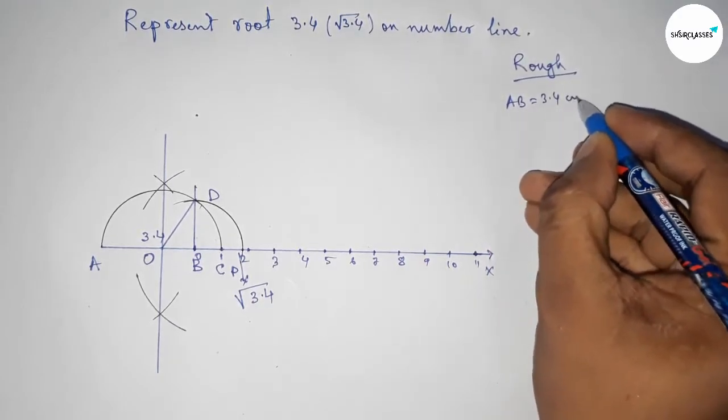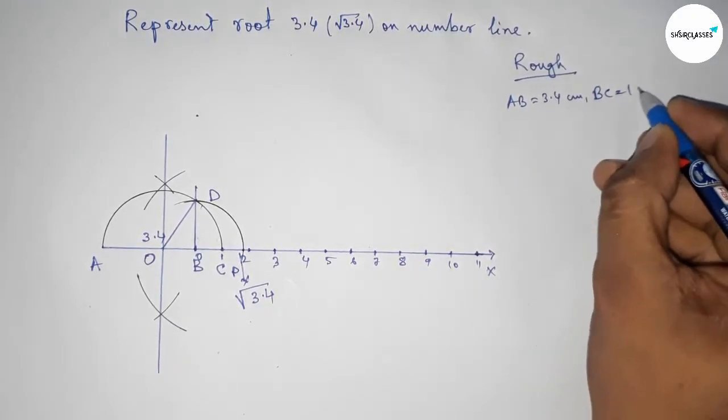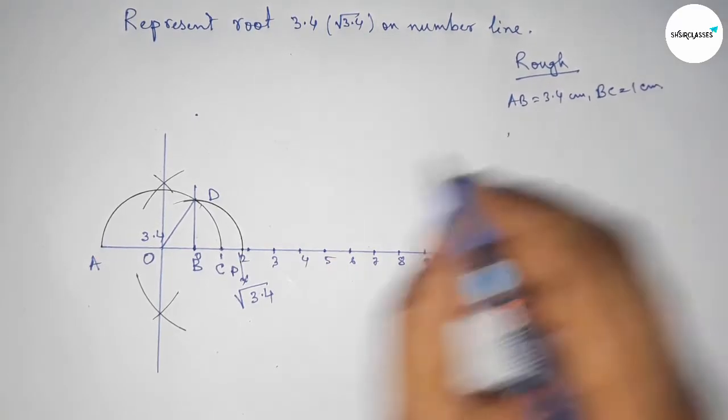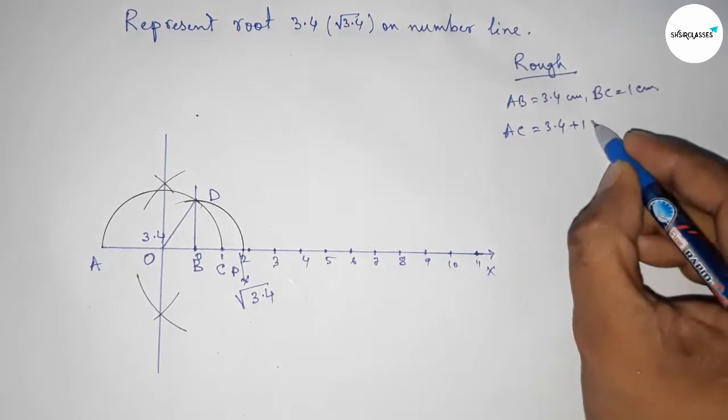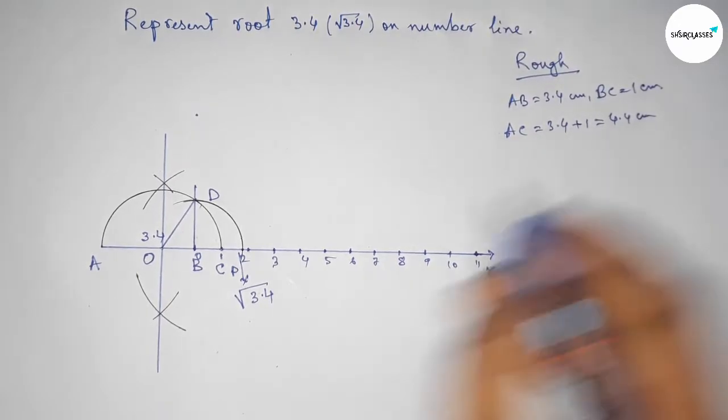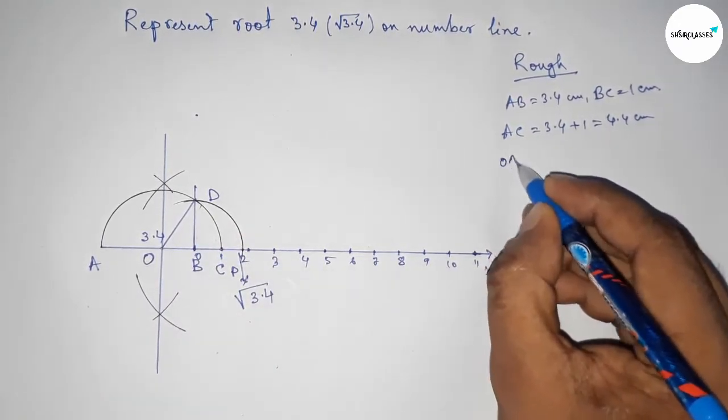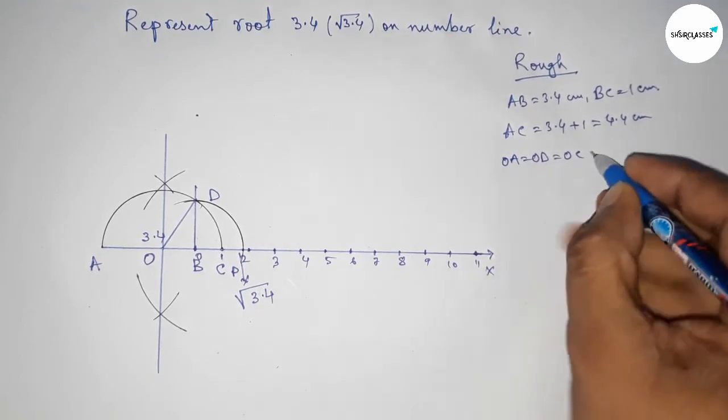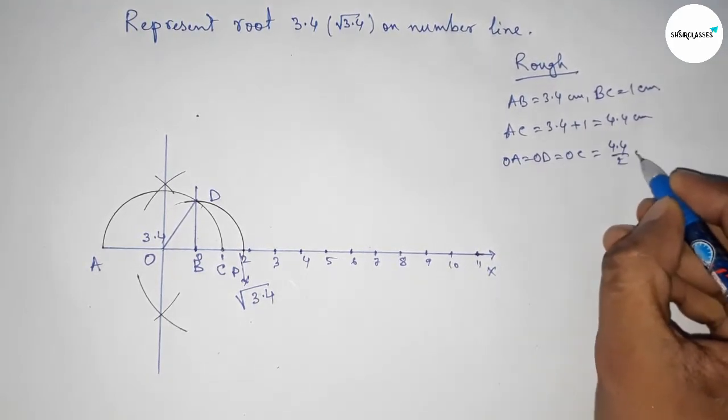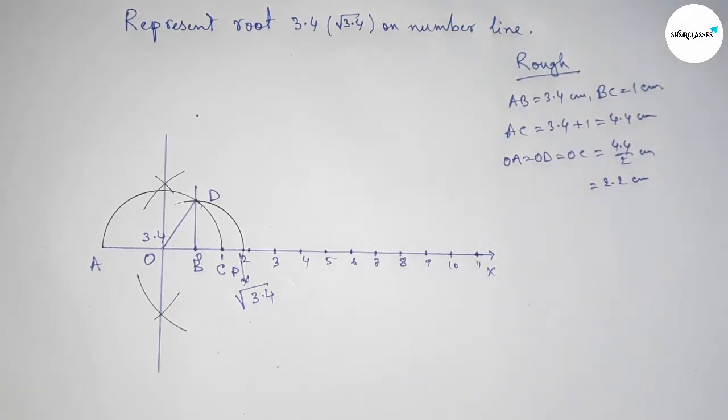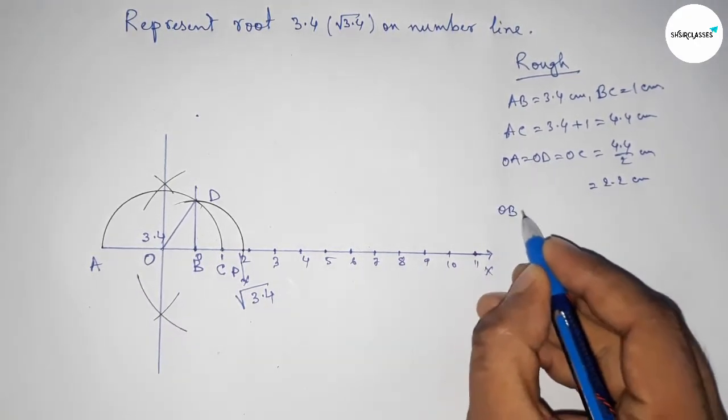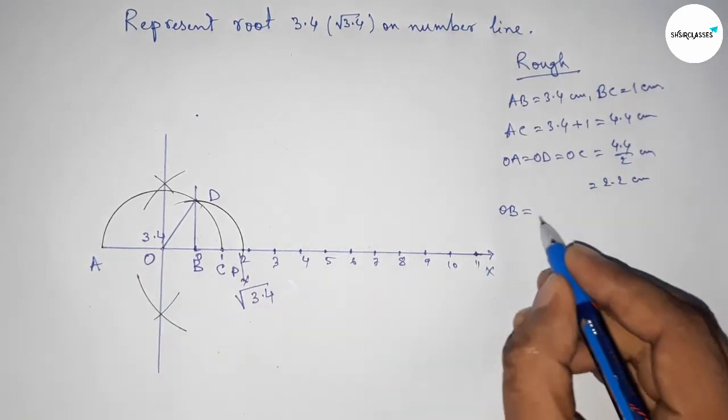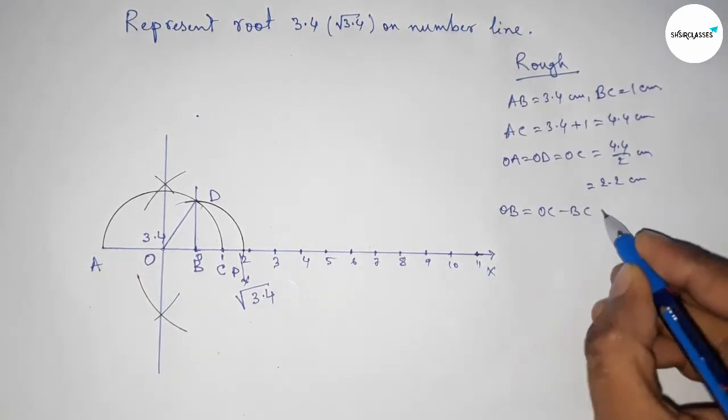Given: AB equals 3.4 centimeters, BC equals 1 centimeter. So AC equals 3.4 plus 1, which is 4.4 centimeters. The radius OA equals OC equals OD equals 4.4 divided by 2, which is 2.2 centimeters. Next, OB equals OC minus BC, which is 1.2 centimeters.